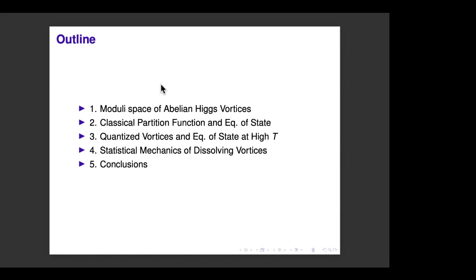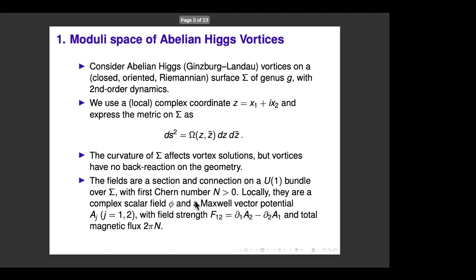Then I'll tackle the more challenging problem: the true statistical mechanics at arbitrary temperature, quantum mechanical, where one really needs to know the spectrum of the quantum Hamiltonian. For a general surface — the underlying surface where the vortices live — I don't know that spectrum, so we go to the limit of dissolving vortices. The geometry simplifies there, and we can work out the spectrum of the Laplace-Beltrami operator on the moduli space explicitly, then do the statistical mechanics using the standard partition function formula.